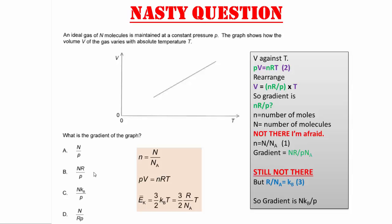So we have to substitute that in there. So the gradient is equal to NKB divided by P, which is equal to answer C, and that's the correct answer.